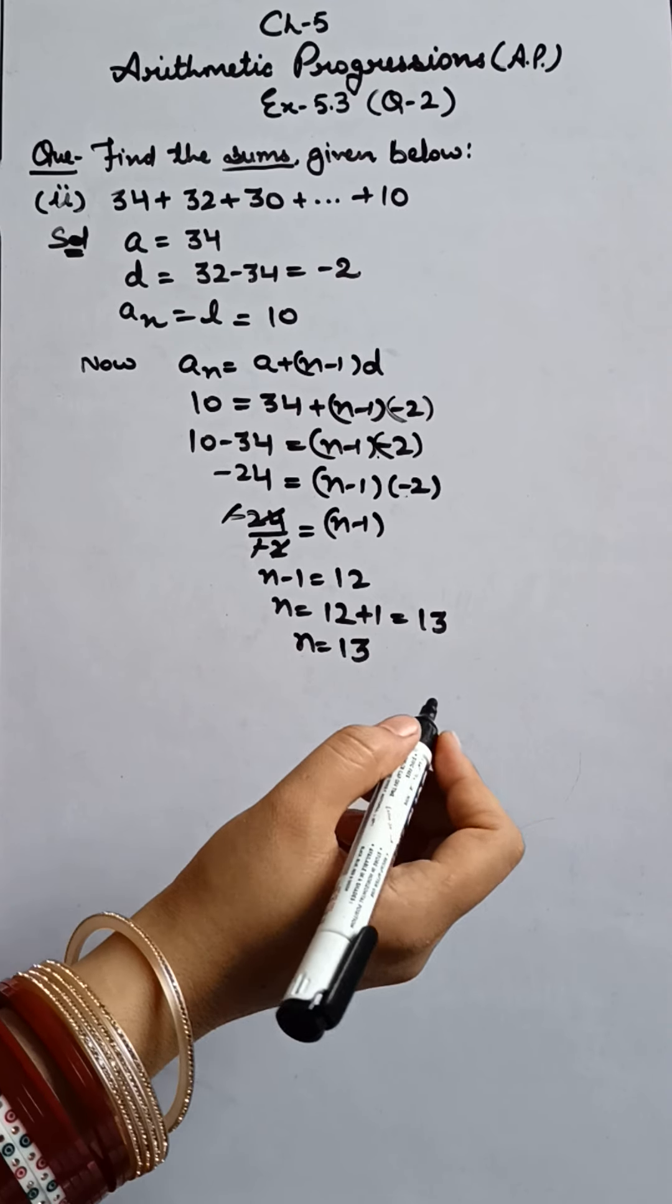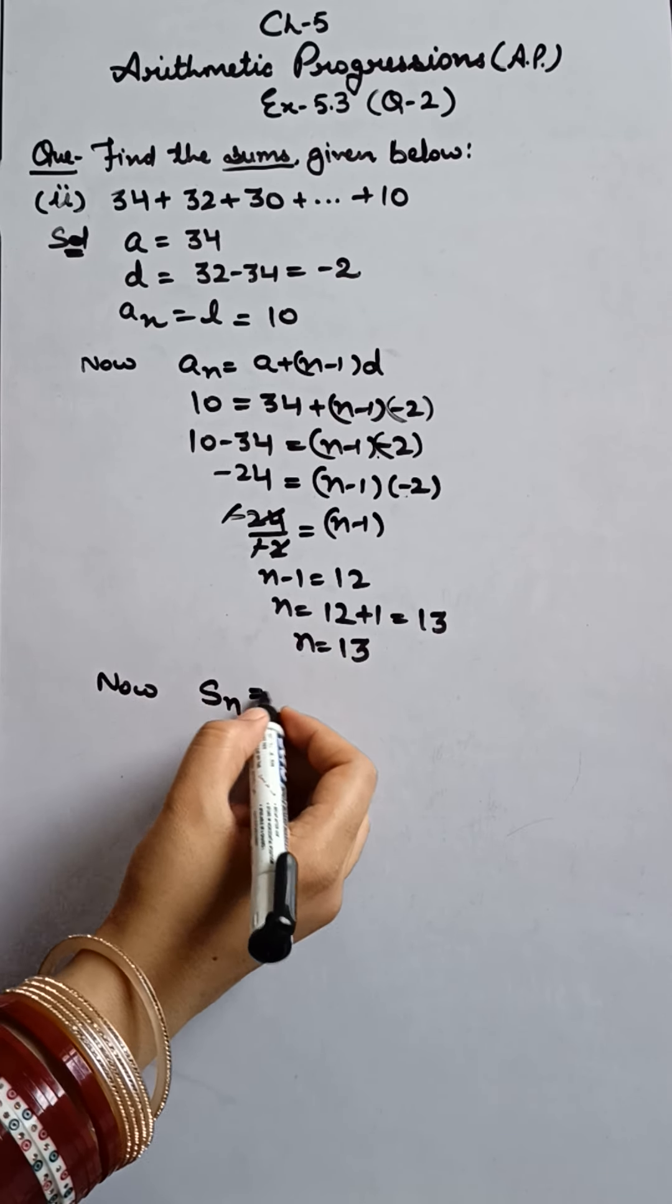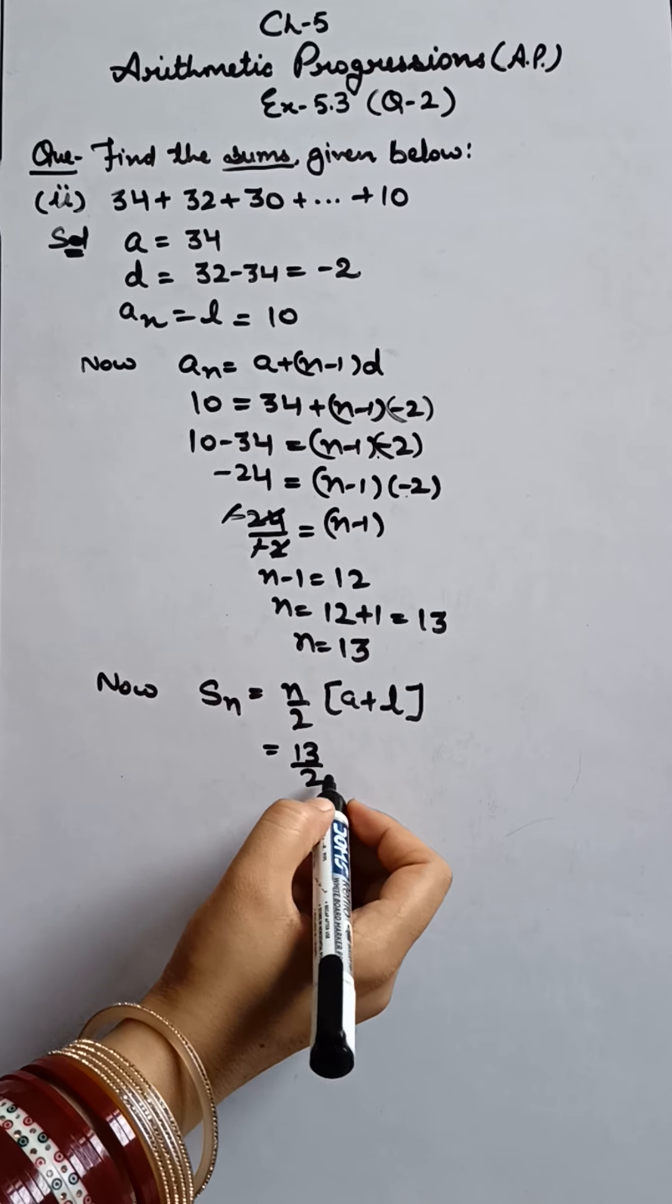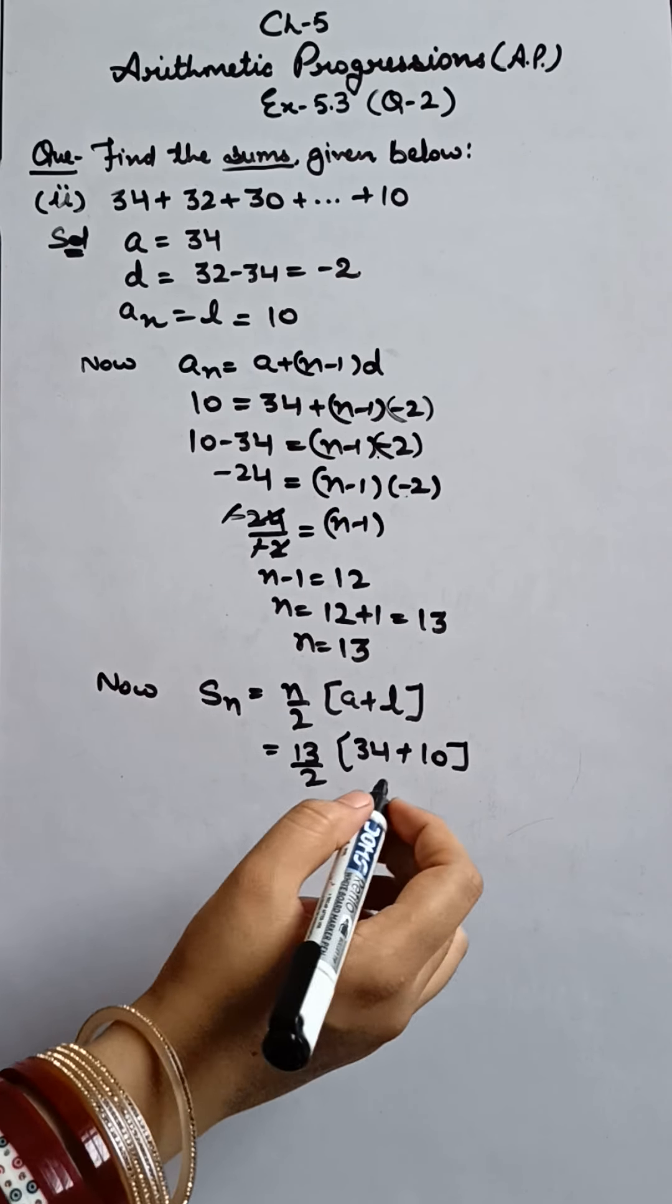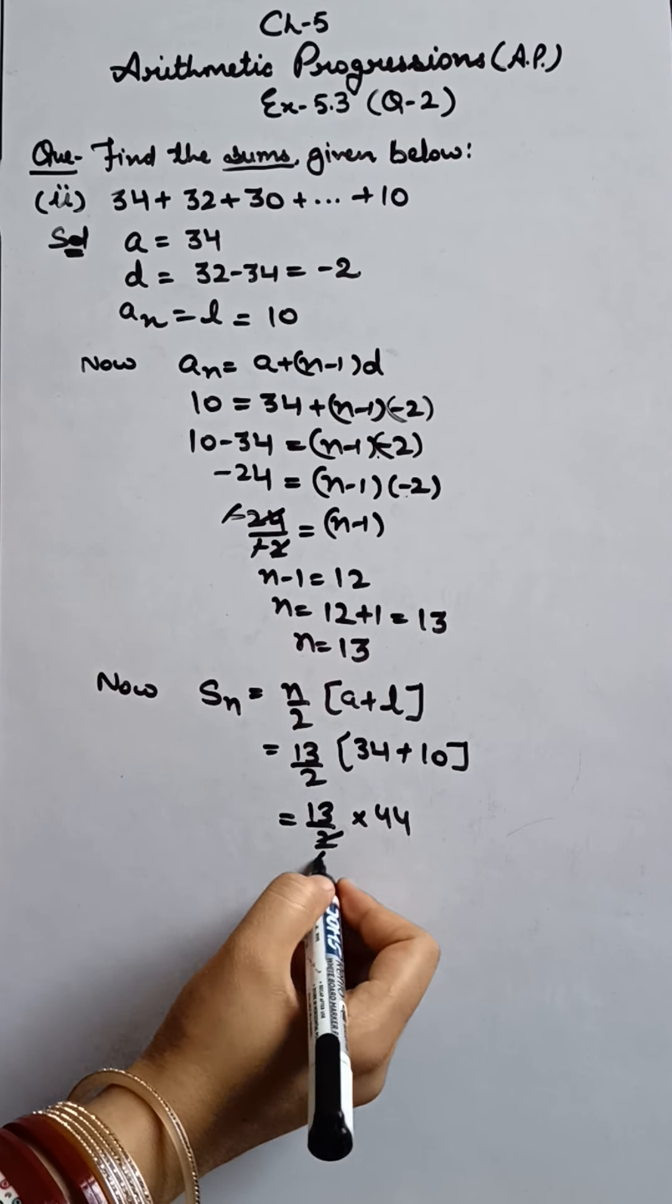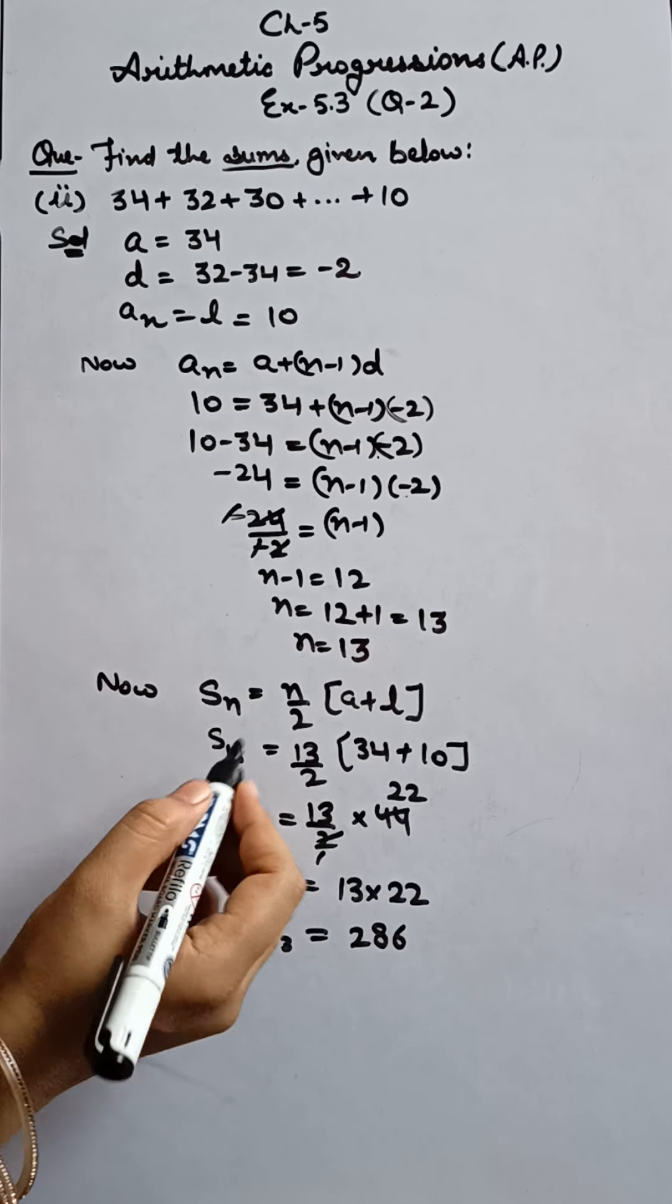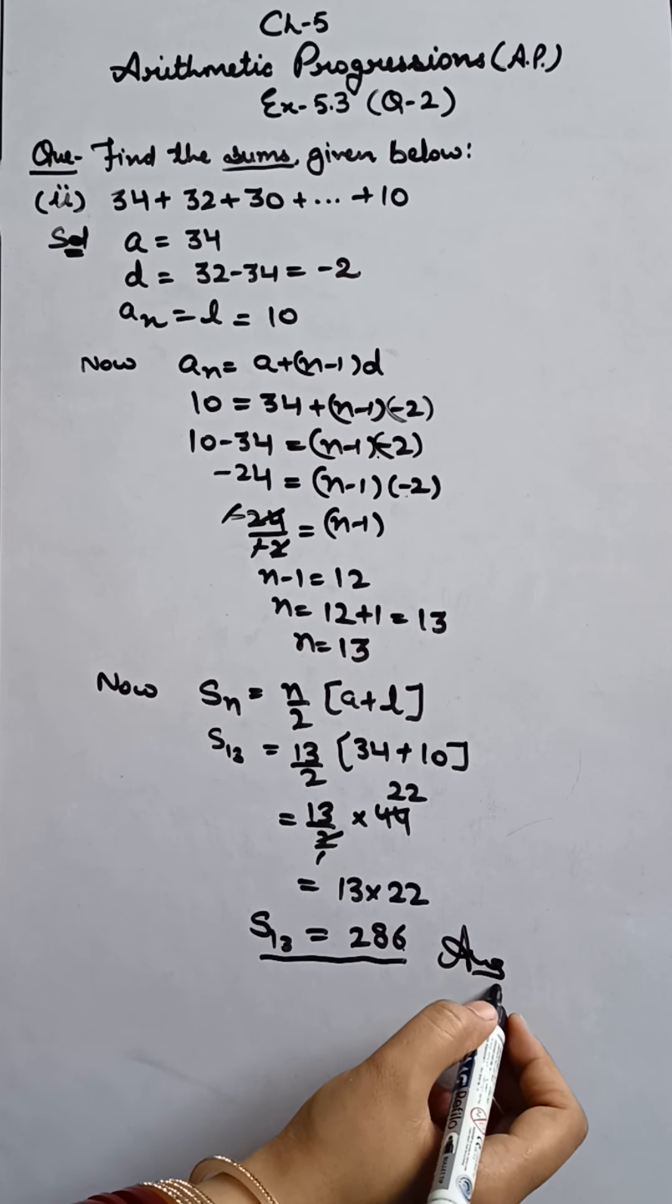But this is not the answer for the question. What do we have to find out? Sum. Sum, SN. Which is N upon 2 into A plus L. You can write A plus AN here, or A plus L, both are same. Now what is N? 13 by 2. A is 34. And L is the last term, 10. 13 by 2, 34 plus 10 is 44. Now you can see 44 and 2, they cancel with each other. And what is left? 13 into 22. And after multiplying we will get 286. And this is the value of S13. We had to find the sum of this AP. And sum is 286. Answer. Clear to all?